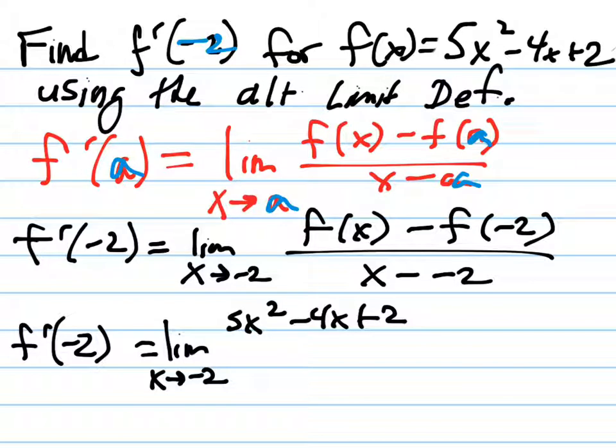The second portion says f of negative 2, the value of f at negative 2, which is found by plugging negative 2 in place of x in our original function f. f of negative 2. So doing so produces, minus all of this, f of negative 2. So that's 5, negative 2 squared is 4,